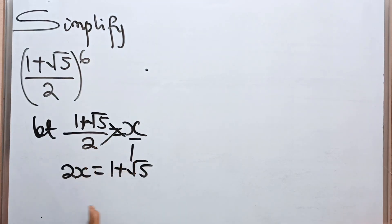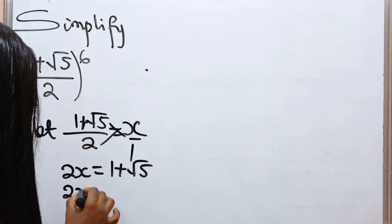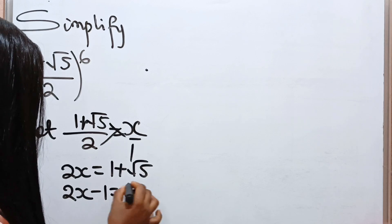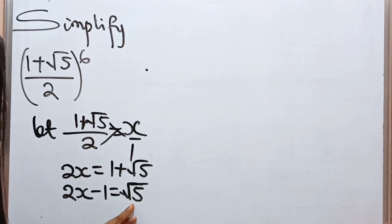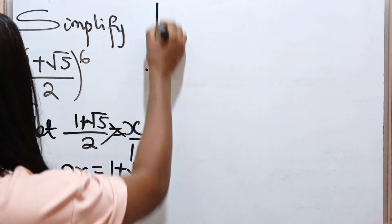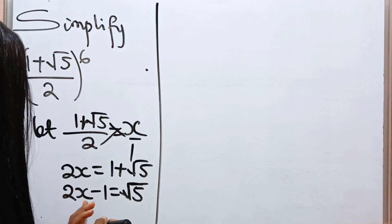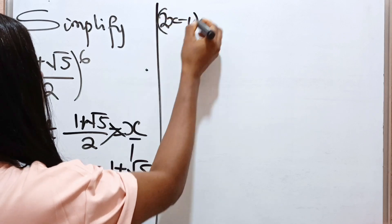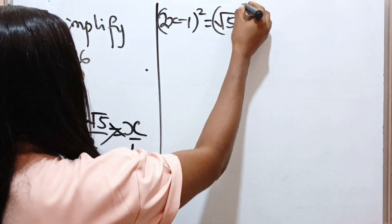Now let's bring the 1 to this side, leaving the root on its own. So we have 2x minus 1 is equal to √5. In order to remove the root sign, the only thing we can do is square both sides of this equation. So we have (2x − 1)² is equal to (√5)².